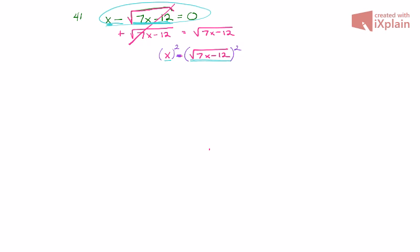So if we do this, we get x squared is equal to, and these take each other out, and the radicand just simply falls down. So it's free now.